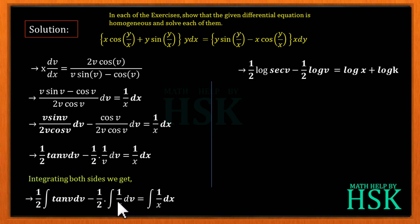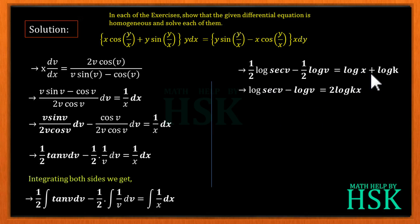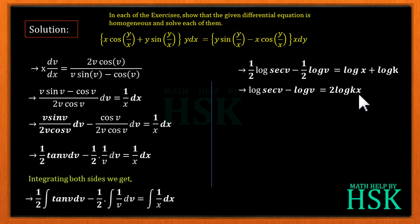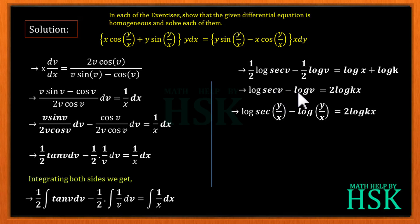Continuing: minus (1/2)·log(v) equals log(x) plus log(k) as the constant of integration. Combining log(x) and log(k) gives log(kx). Multiplying all terms by 2 gives log|sec(v)| − log(v) = 2·log(kx).